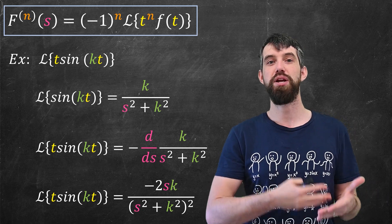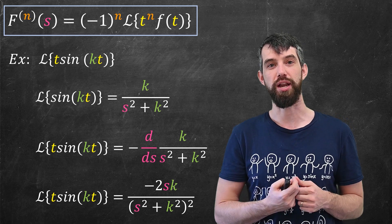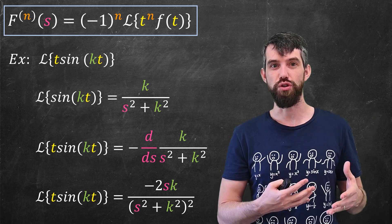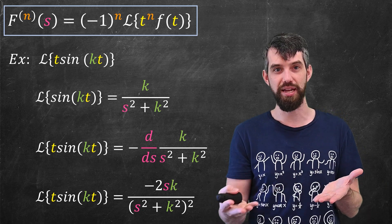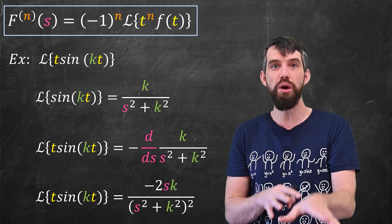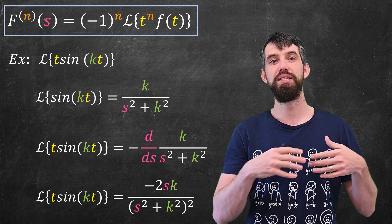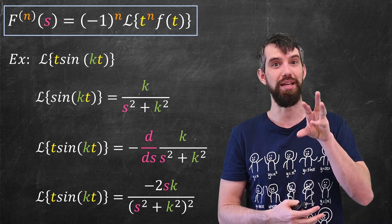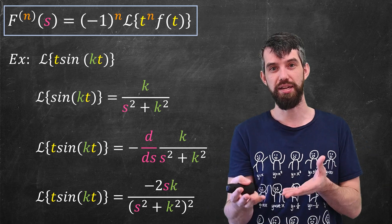So the Laplace transform of t·sin(kt) is 2sk/(s² + k²)². Now this example could have been done without this particular technique — you could write down the definition of the Laplace transform for t·sin(kt) as an improper integral and use integration by parts; it would be longer and messier but doable. Nevertheless, this technique makes it much simpler to compute the Laplace transform of t^n multiplied by something you already know, like sin(kt).